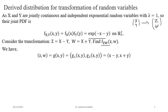To find the joint distribution of Z, W via the Jacobian approach, we identify G1(x,y) = x − y and G2(x,y) = x + y. Doing a little algebra, the inverse image gives X = (Z + W)/2 and Y = (W − Z)/2. Once we have the inverse image, we can easily find the Jacobian of the transformation going from the XY plane to the ZW plane.